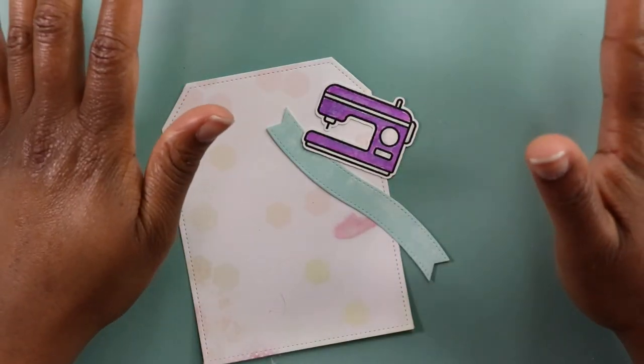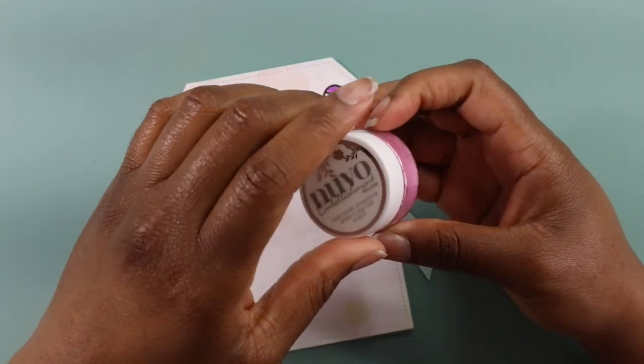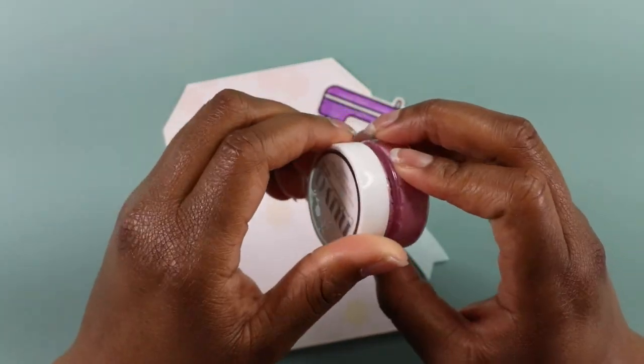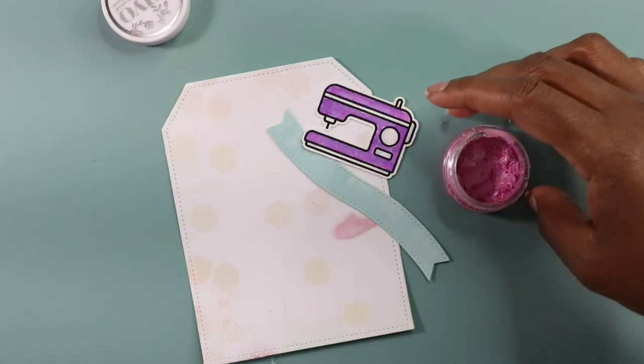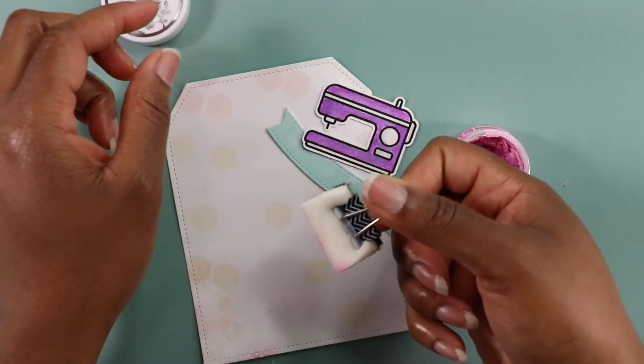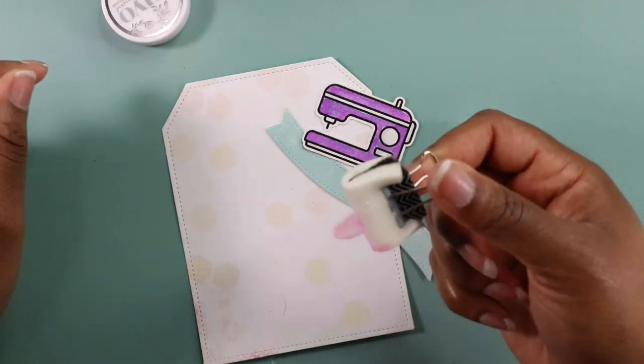For my tags, I used the Mama Elephant Tags A Lot die set and I cut out this large tag and the banner that you see. I also am going to use some Nuvo mousse for this project and I'm using the pink one. I really like this stuff. It came with a card kit and I really love it.